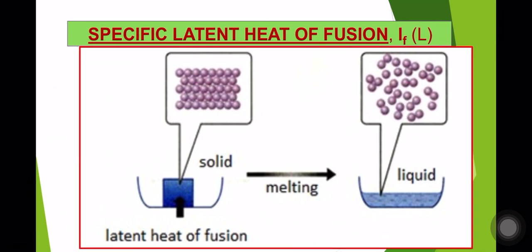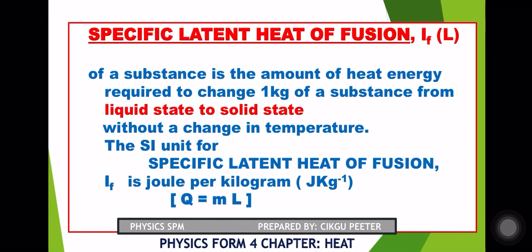So specific latent heat of fusion is the amount of heat energy involved when objects change state from solid to liquid. It also applies from liquid to solid. Specific latent heat of fusion is the amount of heat energy needed by one kg mass of a substance to change the state of matter from liquid to solid while temperature remains constant. The formula remains the same: Q = mL.